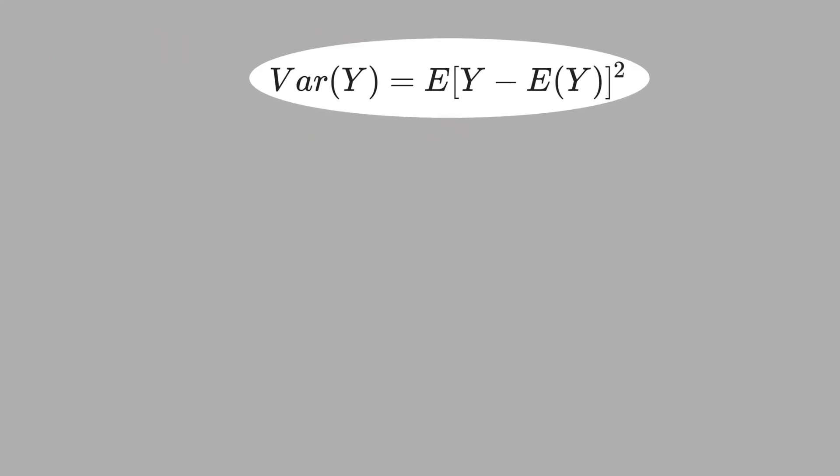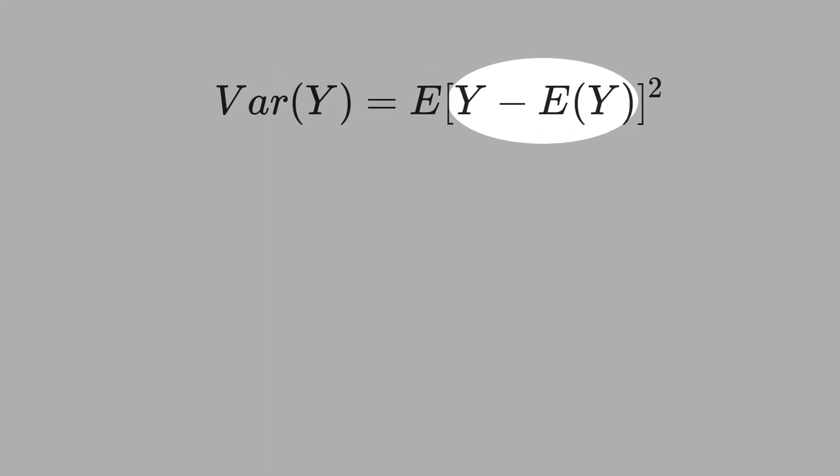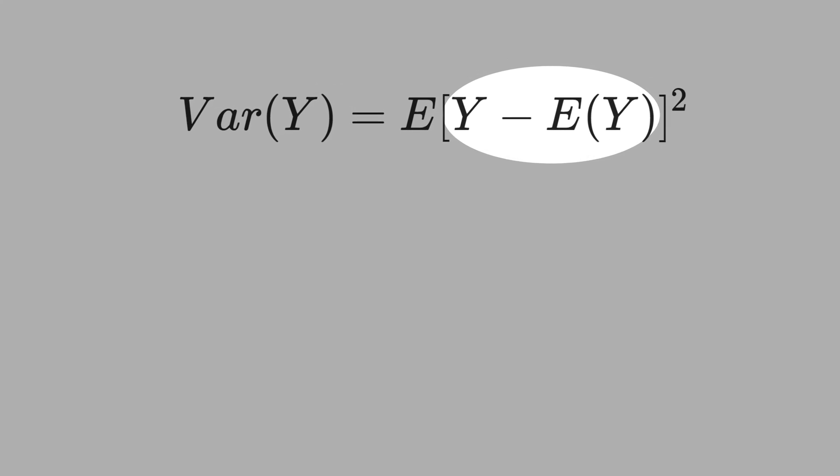Let's see the formula of the unconditional variance. Inside is the deviation around the mean. Expected value of Y is the mean of Y. Then we square the deviations.